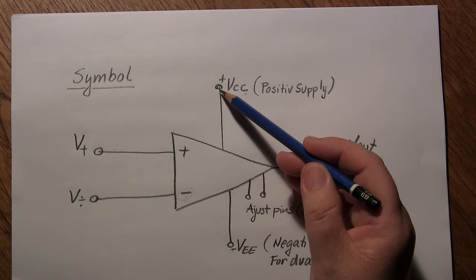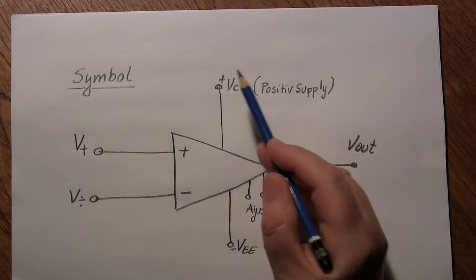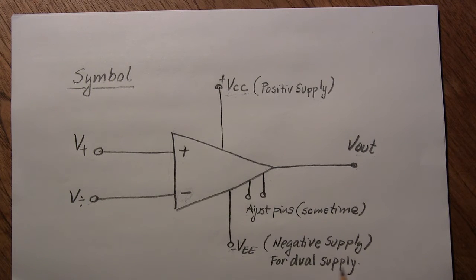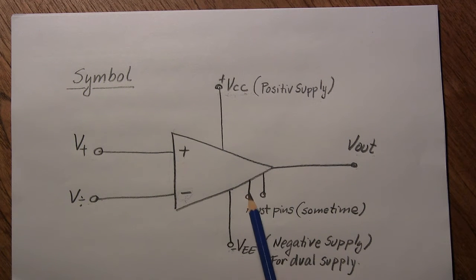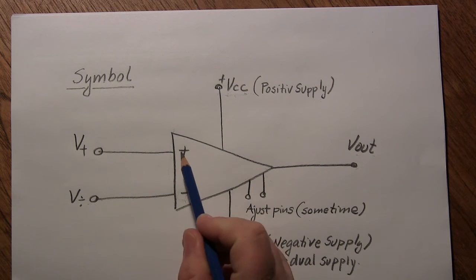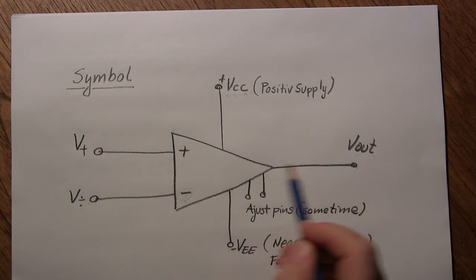The op-amp also needs power. We have the positive supply pin, normally symbolized with a small plus sign and VCC. Then we have the negative supply pin called VEE, and that is normally used for dual supplies. Some op-amps also have adjustment pins, normally drawn below or on top, where we can add some features so that the output will change.